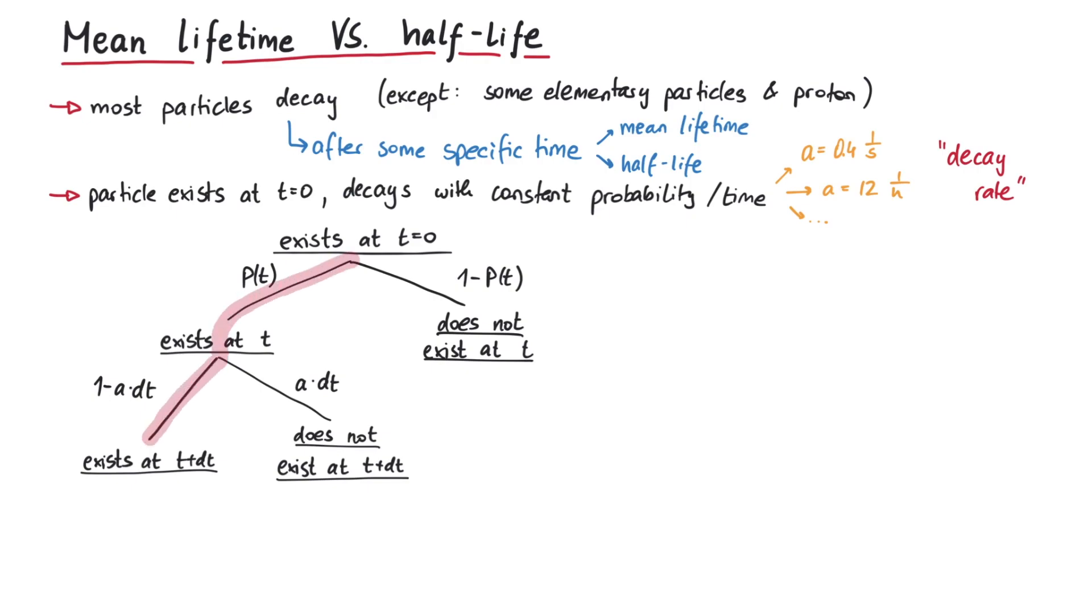So if we now look at the whole diagram, then the path that the particle survives from t equals zero to t plus dt is given by the probability p of t plus dt. But we also know that in such a diagram we multiply the corresponding probabilities along one path that we want to follow.